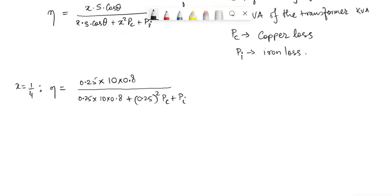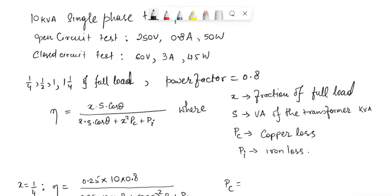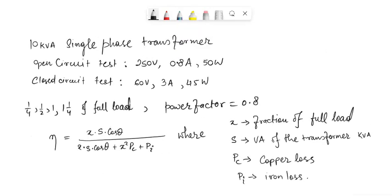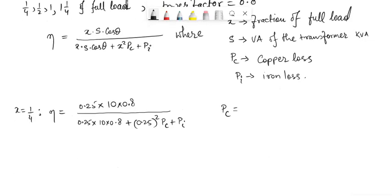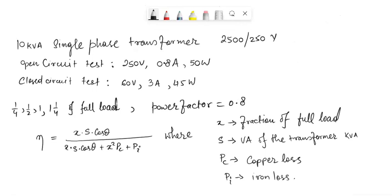The copper loss pc is the voltage difference between input and output. We know that it is a step down voltage for the 10 kilowatt single phase transformer, 2500 to 250 volts. So the voltage difference will be 2500 minus 250 multiplied by the closed circuit test current, which is 3 ampere.